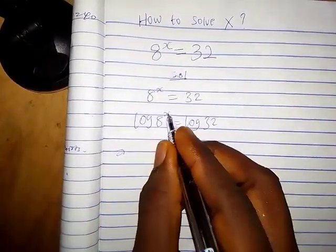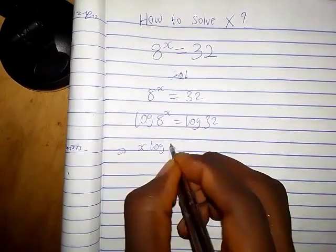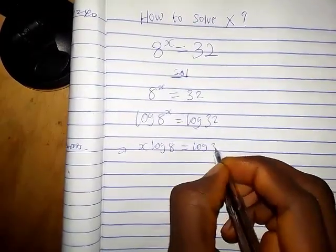This implies we use the power rule. We can bring the power of 8 down to multiply the logarithm, so we have x log 8 equals log 32.